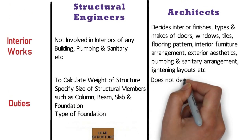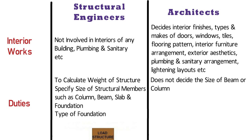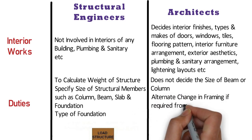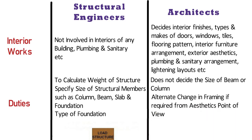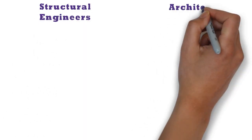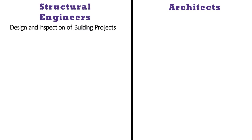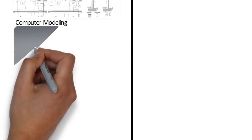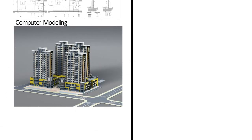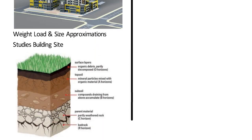Whereas the architect does not decide the size of beam or column but can only request the structural engineer for an alternate change in framing if required from an aesthetics point of view. The architect will typically review contractor's shop drawings and other submittals, and prepare and issue site instructions. Job duties of a structural engineer mainly involve the design and inspection of building projects. Structural engineers create drawings, use computer modeling and build 3D models of structures to determine safety requirements, weight load and size approximations. During inspections, a structural engineer studies the building site, examines soil strata to determine load factors and solves problems when building issues arise.